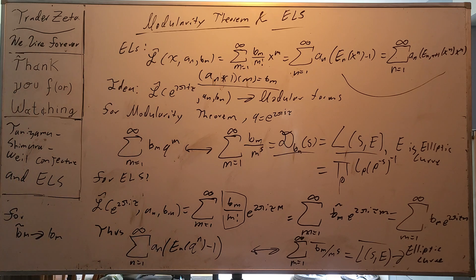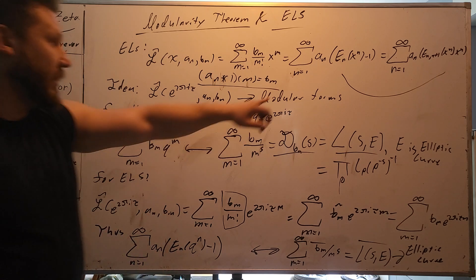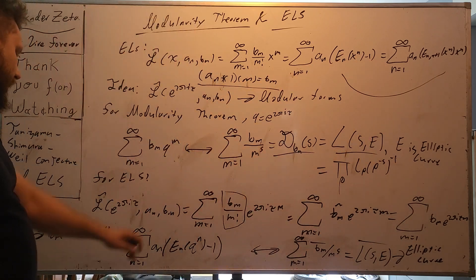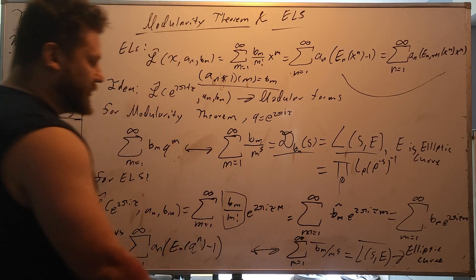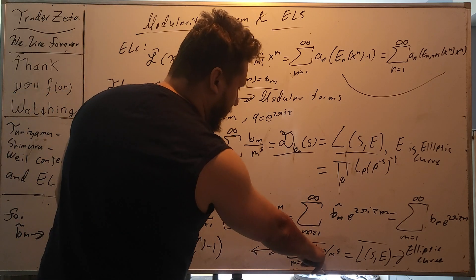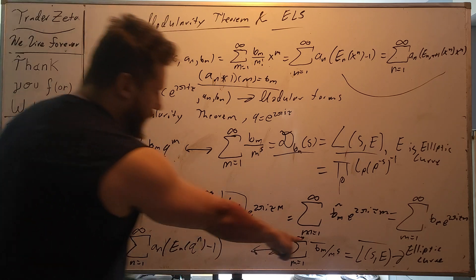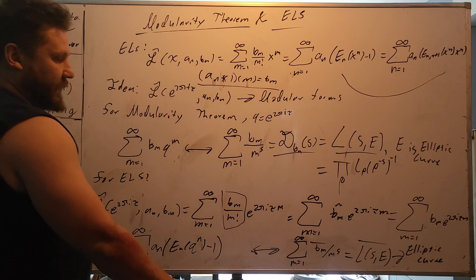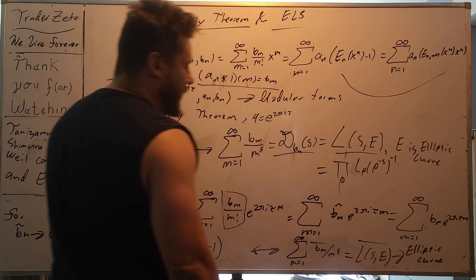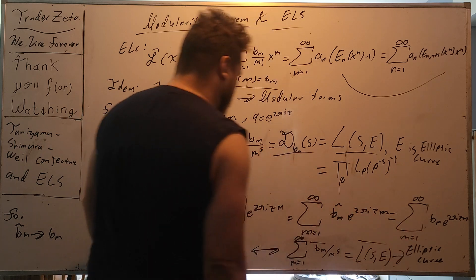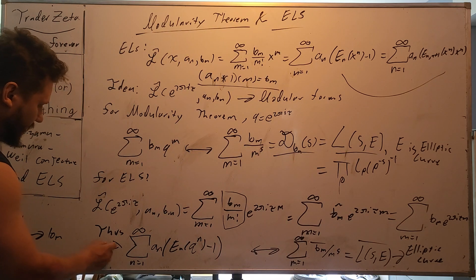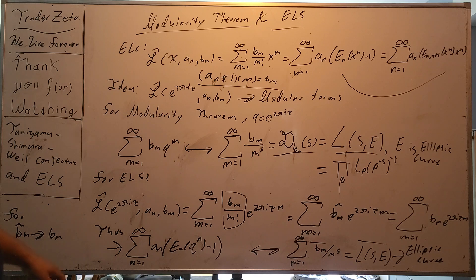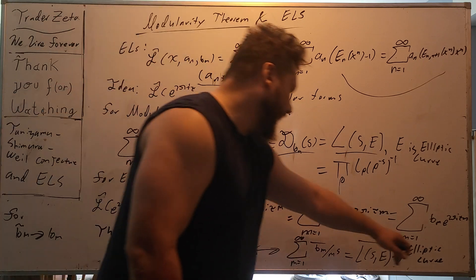Thus, if this is a modular form, this is the Mittag-Leffler function representation of modular forms. There exists an associated Dirichlet series. We'll call this b_m bar divided by m to the s. And this has the associated L series with an elliptic curve. And that's the whole idea. Is that if, in fact, this right here can be proven to be a modular form, then we, in fact, have an elliptic curve.